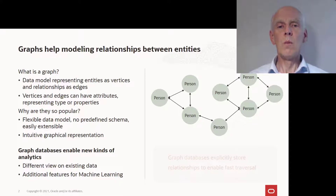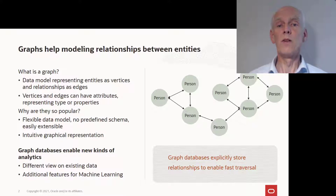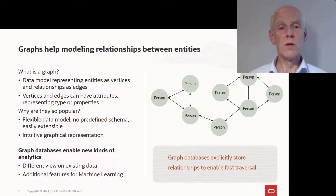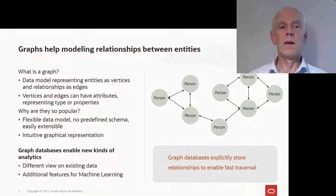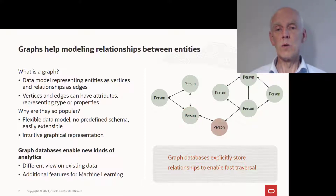Technically, what makes graph databases or converged databases such as the Oracle database different from conventional relational databases is that they treat relationships — the edges between vertices — as first-class objects in the database, meaning these edges are explicitly stored. This is what enables fast traversal of these edges and makes it possible to perform, for example, path queries between pairs of vertices very quickly.